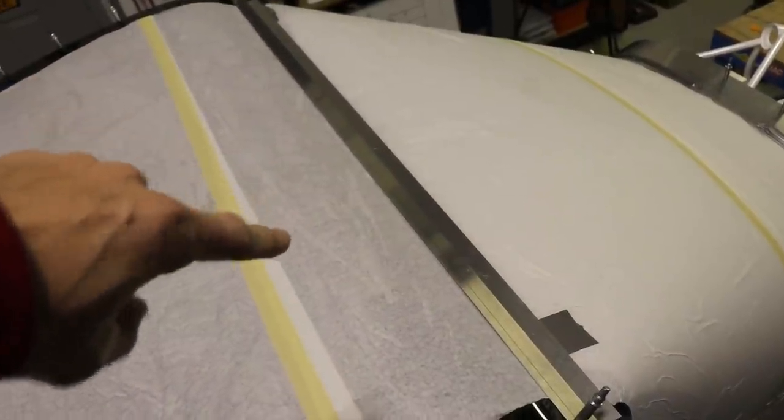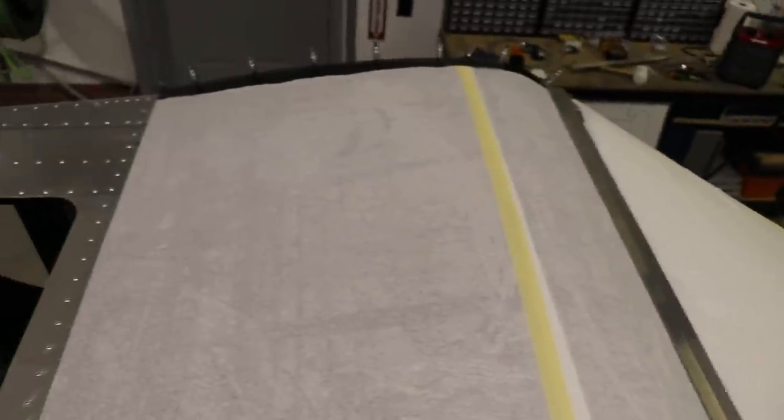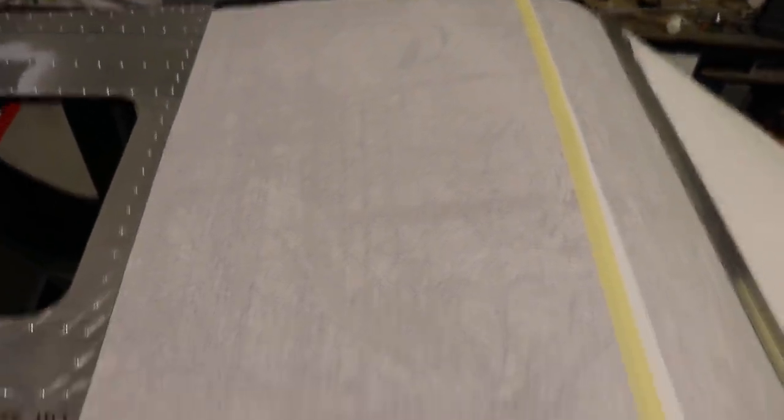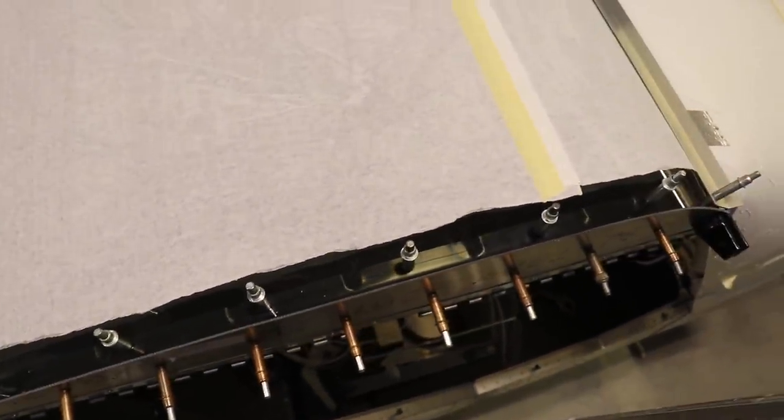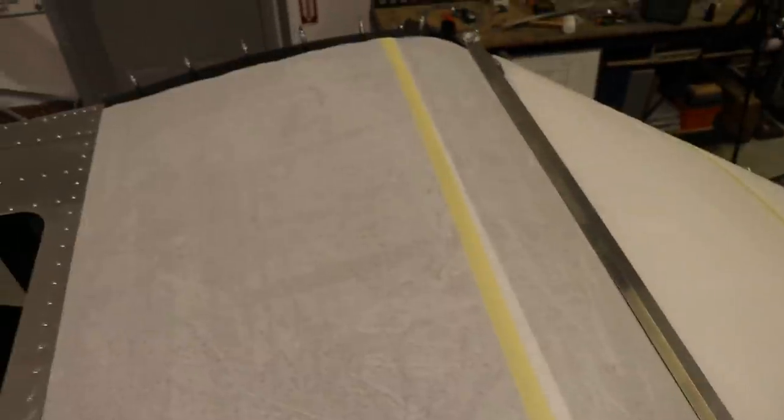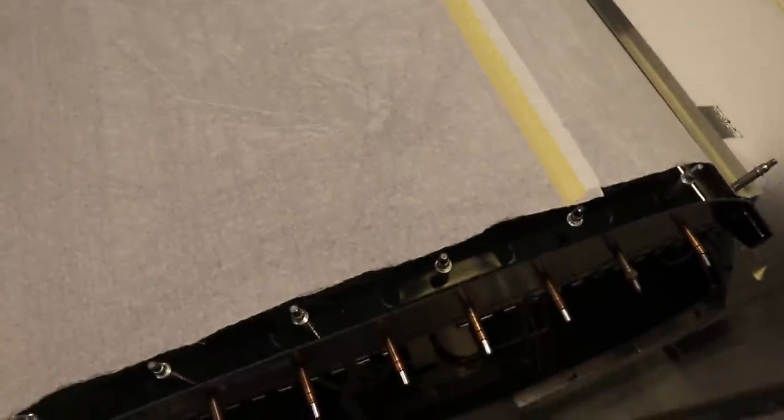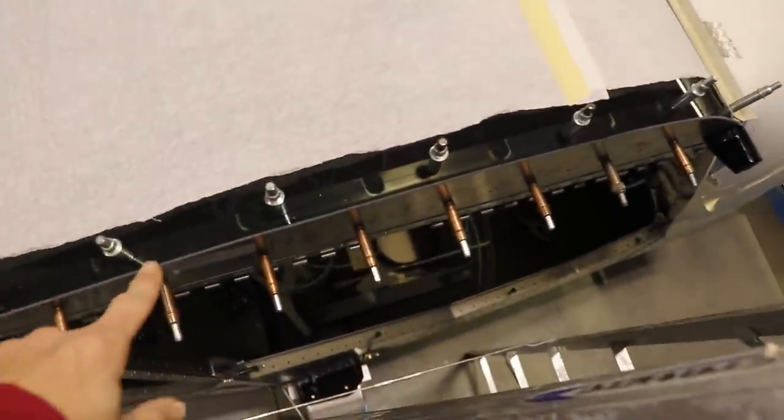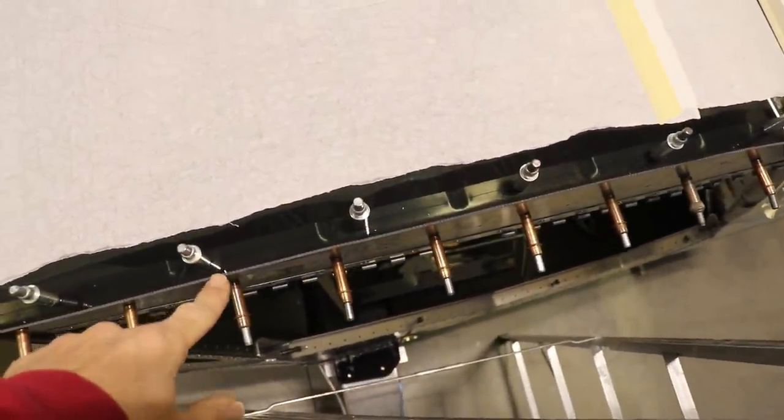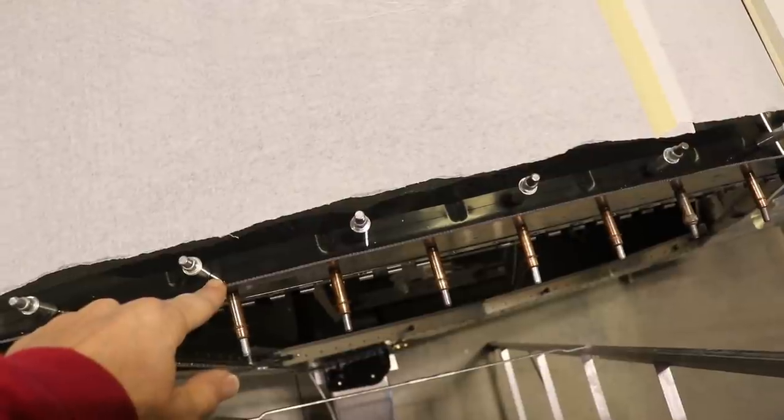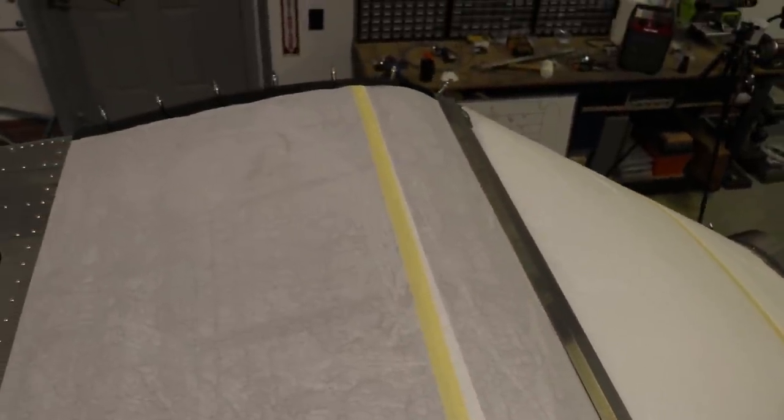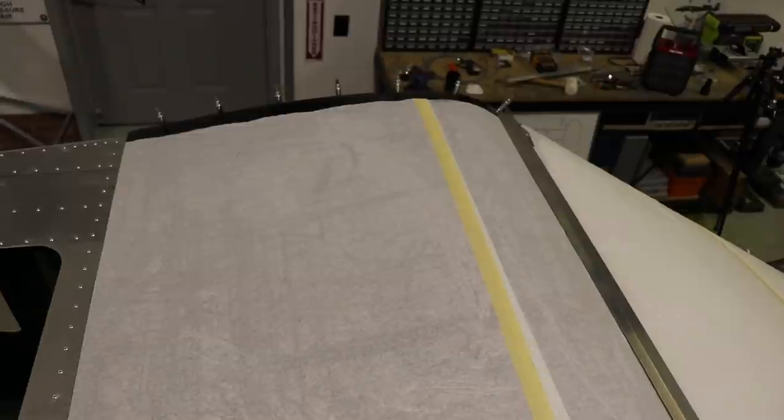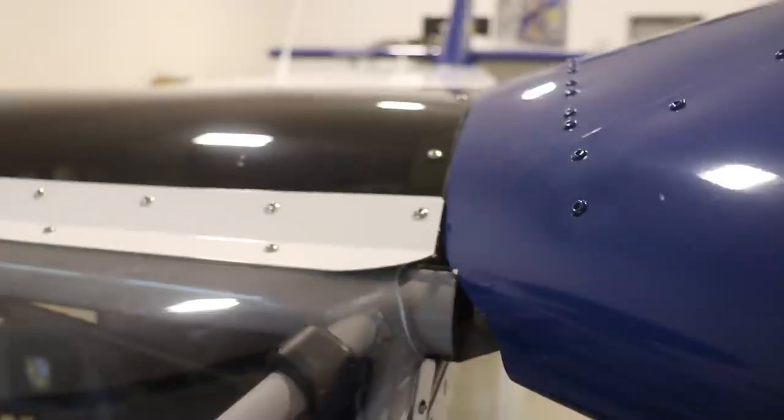Some of you guys are probably wondering if I'm using a special Lexan bit, and I'm not. I'm using a regular number 40 bit. I can only talk to you from my personal experience, but I've done this the same exact way on four airplanes. I just use a drill bit at a slow speed and I drill right through Lexan, never ever had a problem, and I've never ever needed to use one of those expensive hard to find Lexan drill bits.